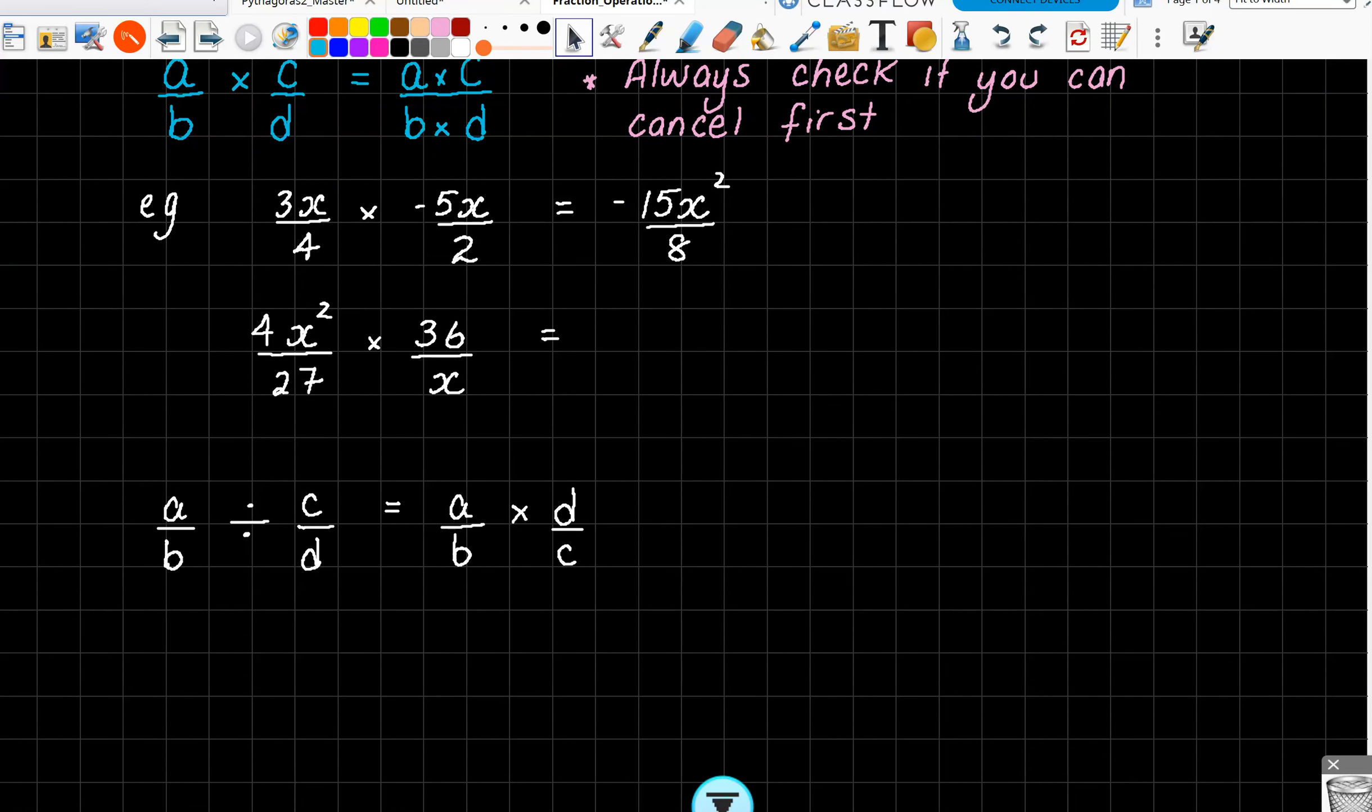When we come to the next one, this is where we should have a little bit of fun because I don't want to have to work out what 4 times 36 is unless I really have no other choice. So this is where we can do that cancelling. Who can remind us? How would you explain to someone how we can cancel fractions when we've got a multiplier there? Eric?